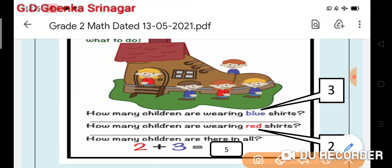How many children were wearing blue shirt? So the answer here is 1, 2 and 3.